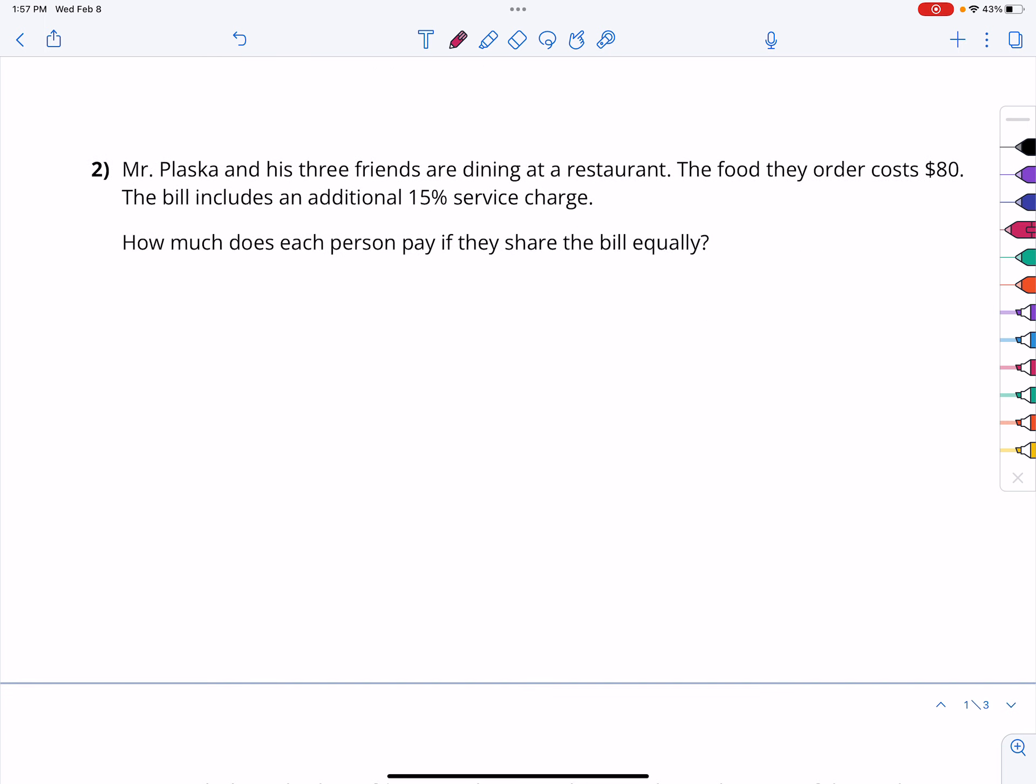Mr. Plaska and his three friends are dining at a restaurant. The food they order costs $80. The bill includes an additional 15% service charge. How much does each person pay if they share the bill equally? That means my cost of food here is $80, but on top of that $80, there's an additional 15% charge, and then that means this whole amount is going to be our total shared by four people, because that's me, person one, plus the three friends.